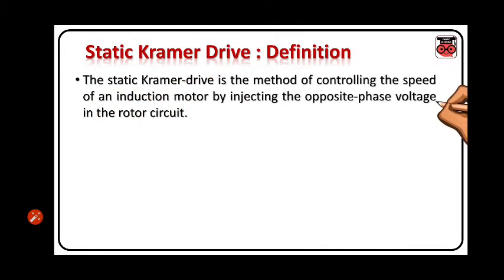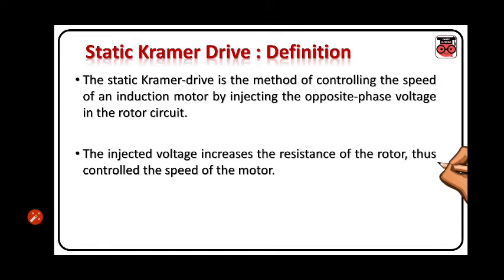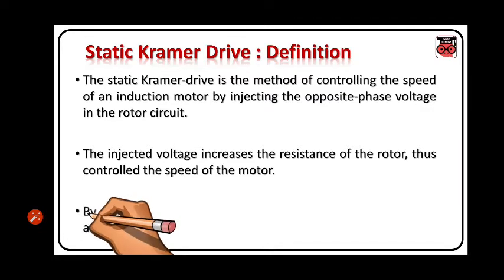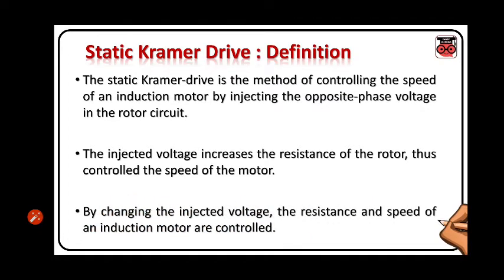This drive is a method of controlling the speed of an induction motor by injecting the opposite phase voltage in the rotor circuit. The injected voltage increases the resistance of the rotor, thus controlling the speed of the motor. By changing the injected voltage, the resistance and speed of the induction motor are controlled.